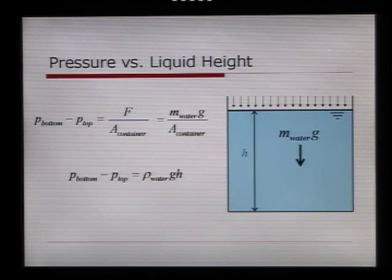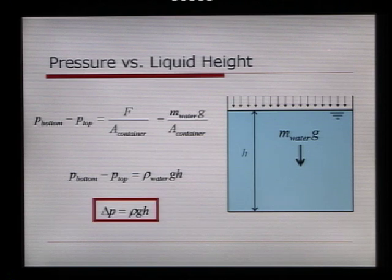By working down through this, we can find that the delta P, the difference in pressure, is equal to the density of the water times gravity times the height of the vessel. And an easier way of writing that would be delta P is equal to rho g h. This is an equation that you need to know.